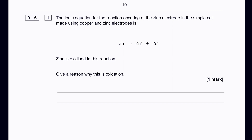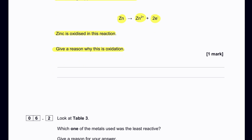The ionic equation for the reaction at the zinc electrode in a simple cell made using copper and zinc is: Zn → Zn²⁺ + 2e⁻. Zinc is oxidized in this reaction. Oxidation is defined by loss of electrons, so we say zinc has lost electrons.